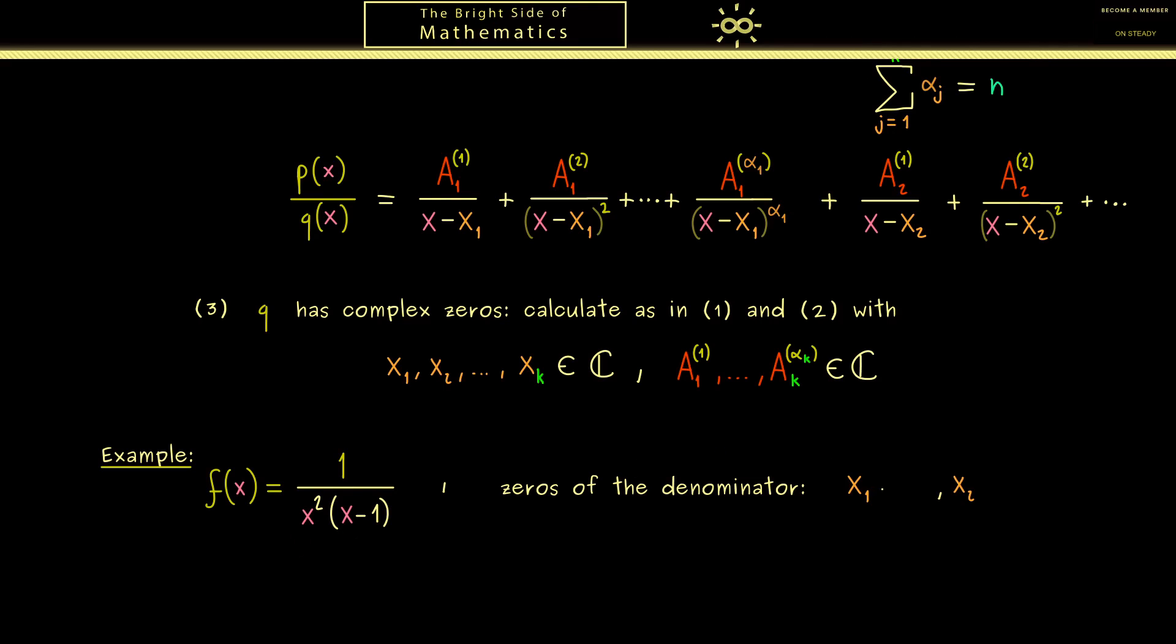Hence we can immediately read the two zeros the denominator has. It's 0 and plus 1. And moreover the multiplicities are given by 2 and 1.